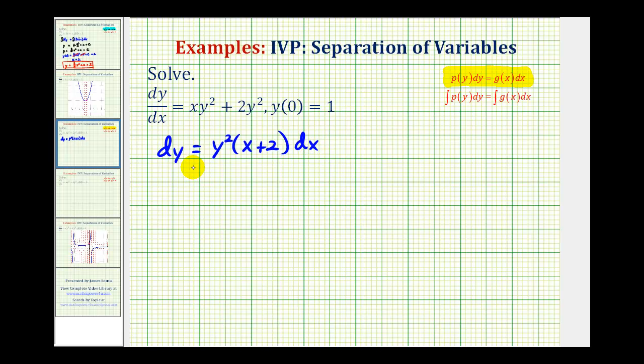Now we've made some progress. x plus two is a function of x times dx, but we still have this y squared here. So now we're going to divide both sides of the equation by y squared.